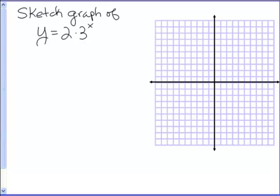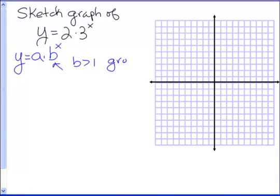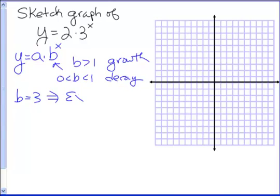Remember our model for exponential functions is y equals a times b to the x power. We focus on b to decide whether this is growth or decay. If b is greater than 1 we have growth. If b is less than 1 but bigger than 0 we have decay. In our problem b is equal to 3, so that implies we have exponential growth.